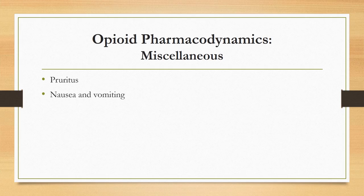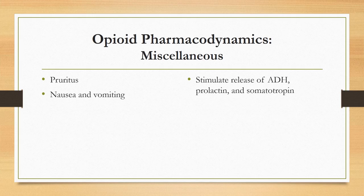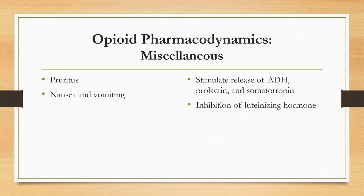There is also a vestibular component to nausea and vomiting with opioid administration, as incidence is much lower when patients remain supine. Higher, repeated doses of opioids can actually have an anti-emetic effect by depressing the vomiting center. However, clinically when an opioid is administered as part of a patient's anesthetic plan, there is an increased incidence of postoperative nausea and vomiting. To a lesser extent, opioids can stimulate the release of ADH, prolactin, and somatotropin, and inhibit release of luteinizing hormone, which over time can lower testosterone and reduce analgesic effect.